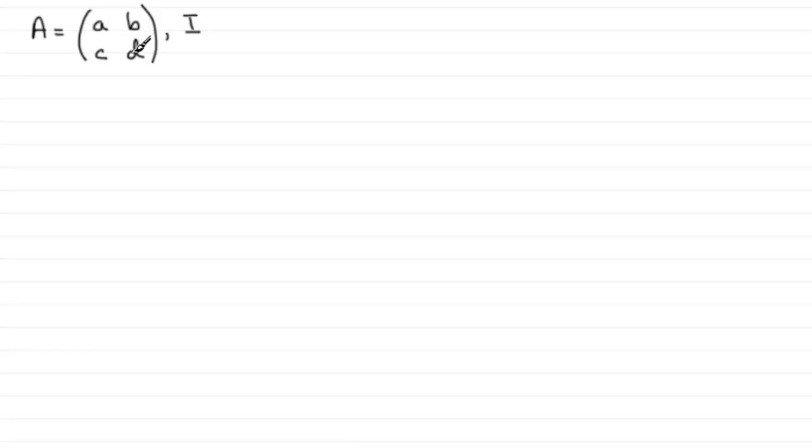Suppose there was a matrix I such that A times I was exactly the same as I times A, and the result was just simply A. What would that matrix I be? Well, with experimentation it turns out to be this matrix 1 0 0 1. The identity matrix is what it's called.